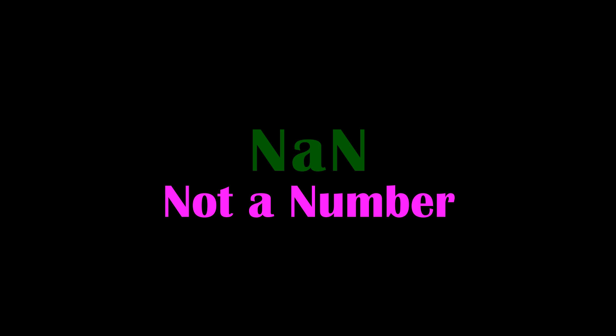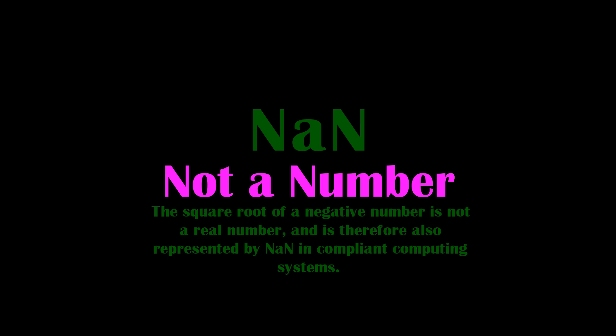In mathematics, 0 divided by 0 is undefined and is therefore represented by NaN in computing systems. It may also be used to represent missing values in computations. For example, the square root of a negative number is not a real number, and is therefore also represented by NaN in compliant computing systems.